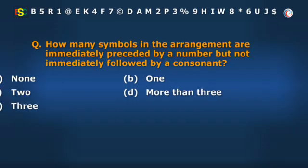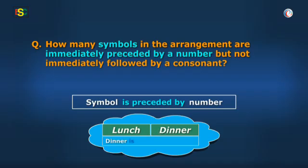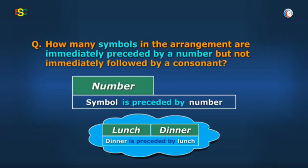Okay, in the question, symbol is immediately preceded by a number just as dinner is preceded by lunch. So, in this case, the sequence becomes number then symbol.